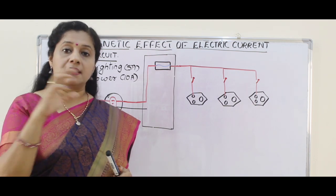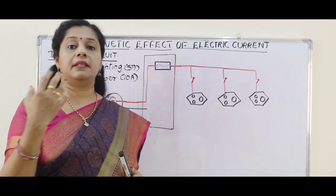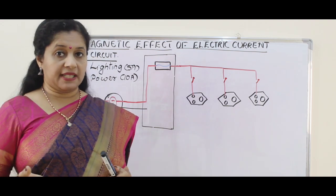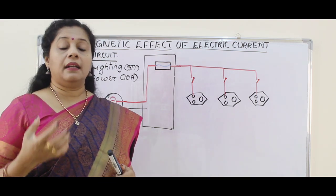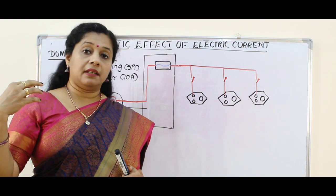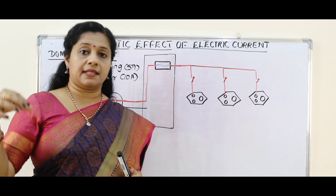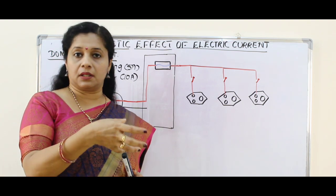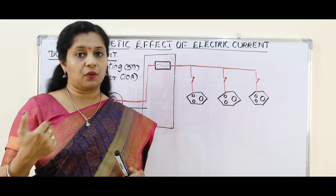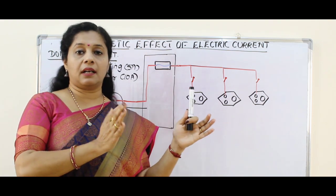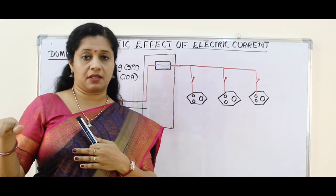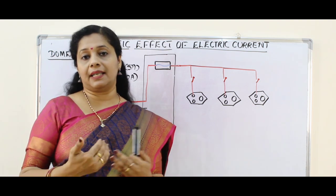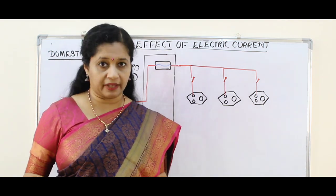Because if one circuit has a problem — for example, our fridge gets damaged — it may cut off power to the heavy gadgets, but still our bulb, light, and fan will all work because they are not connected to that circuit. So one complete circuit will stop, but the other one will still work. That is why we connect them in parallel; otherwise everything will blow off.